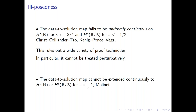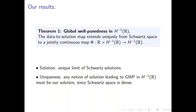Our first result bridges the gap for the problem on the real line: we prove that the data-to-solution map extends uniquely from Schwartz space to a jointly continuous map of time and initial data with values in H^{-1}. Our solutions are unique limits of Schwartz solutions — given initial data in H^{-1}, we approximate it by Schwartz initial data, each leading to a global Schwartz solution, and the theorem says these global Schwartz solutions converge in H^{-1}, with the limit being our solution.